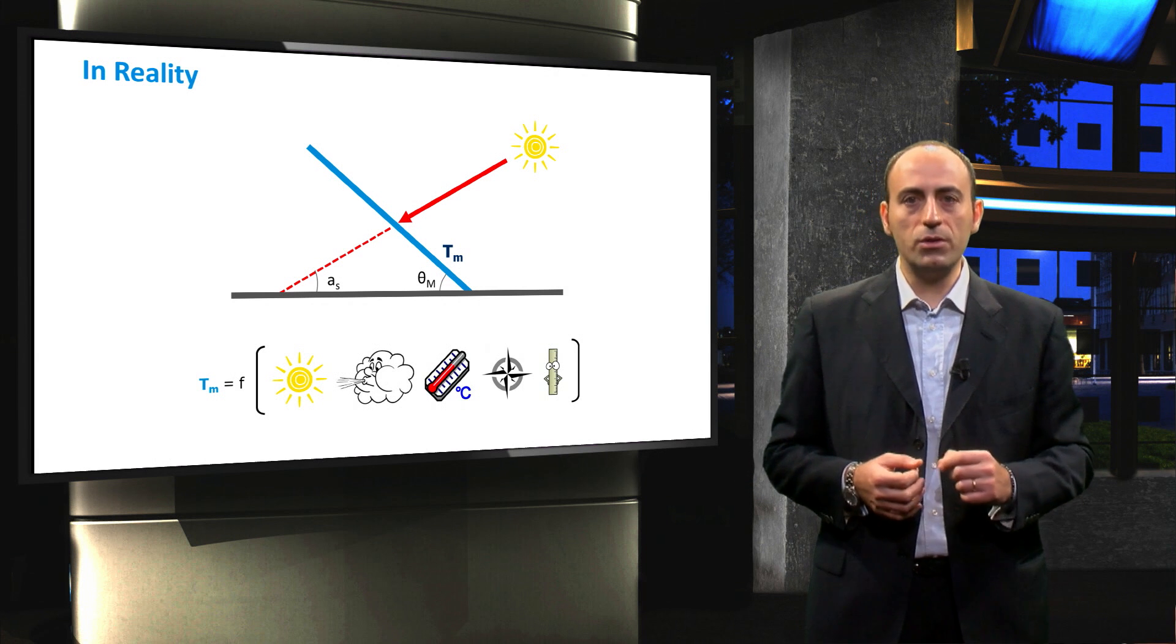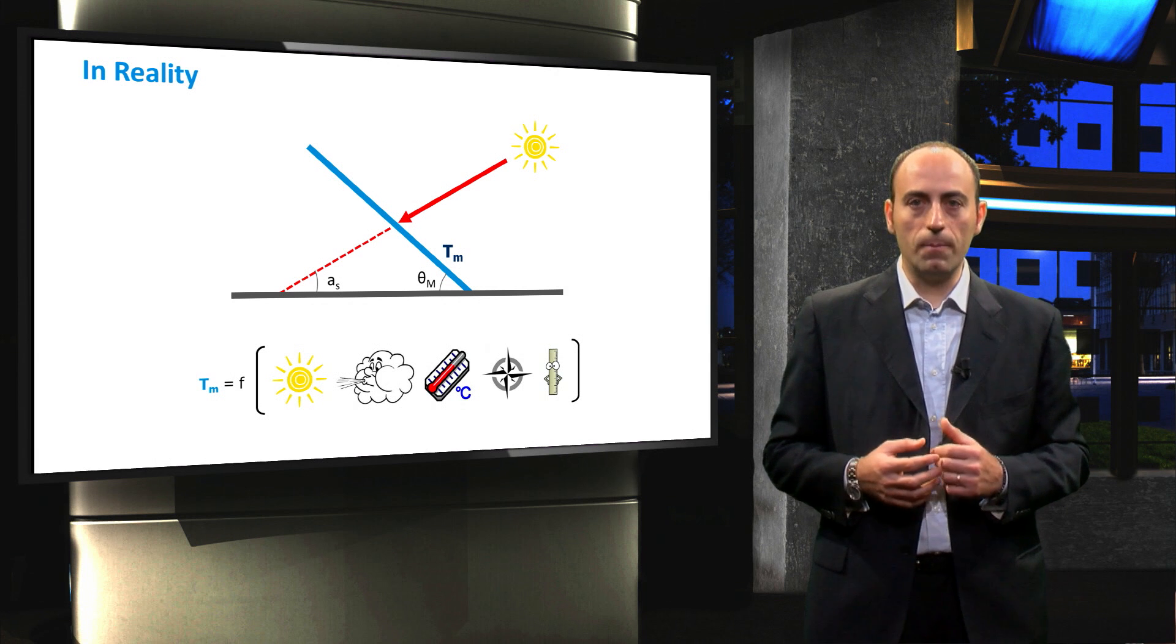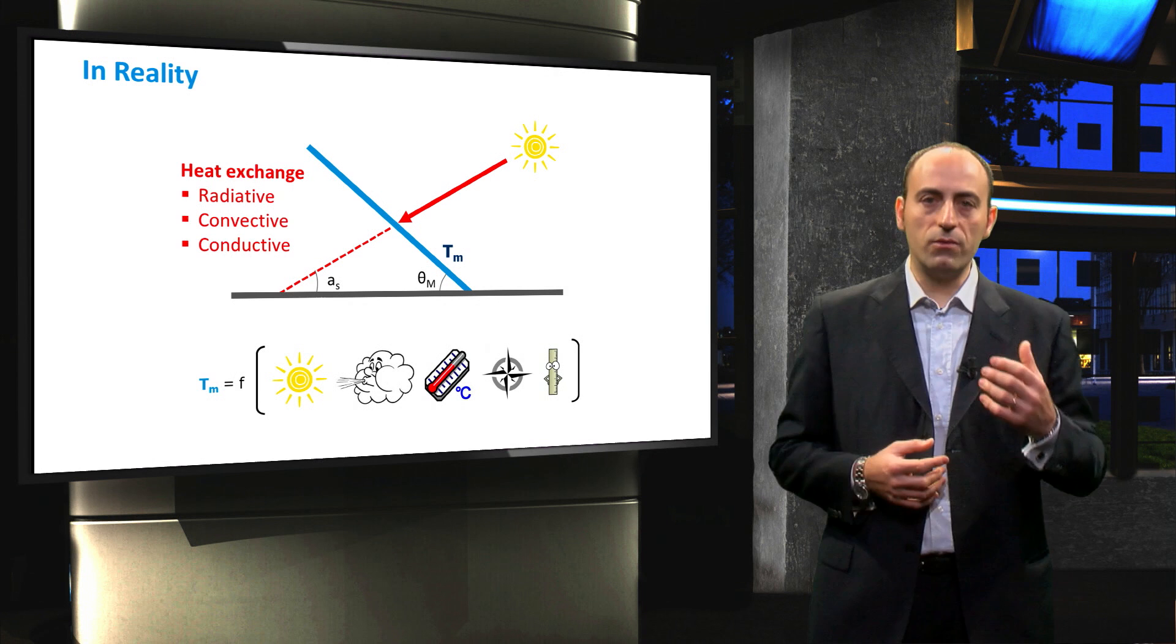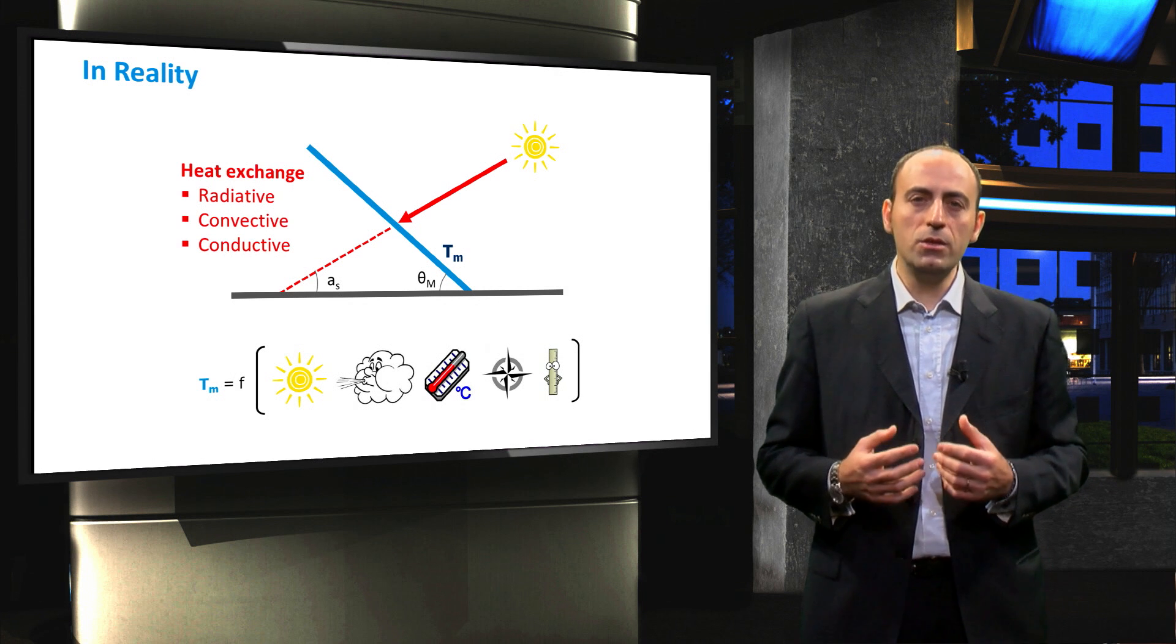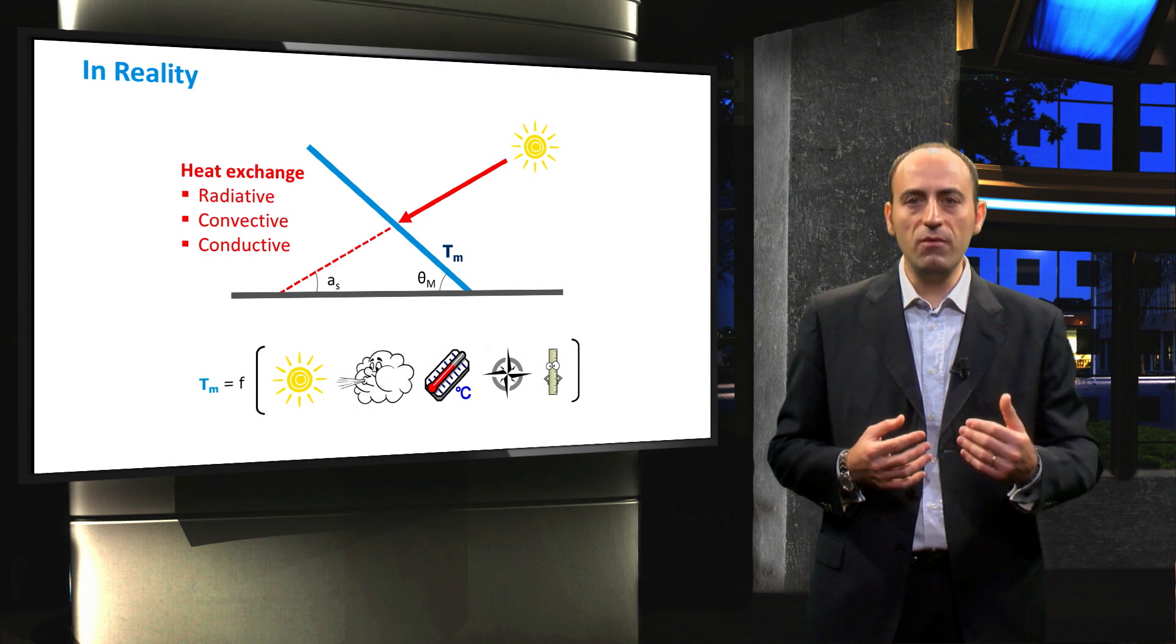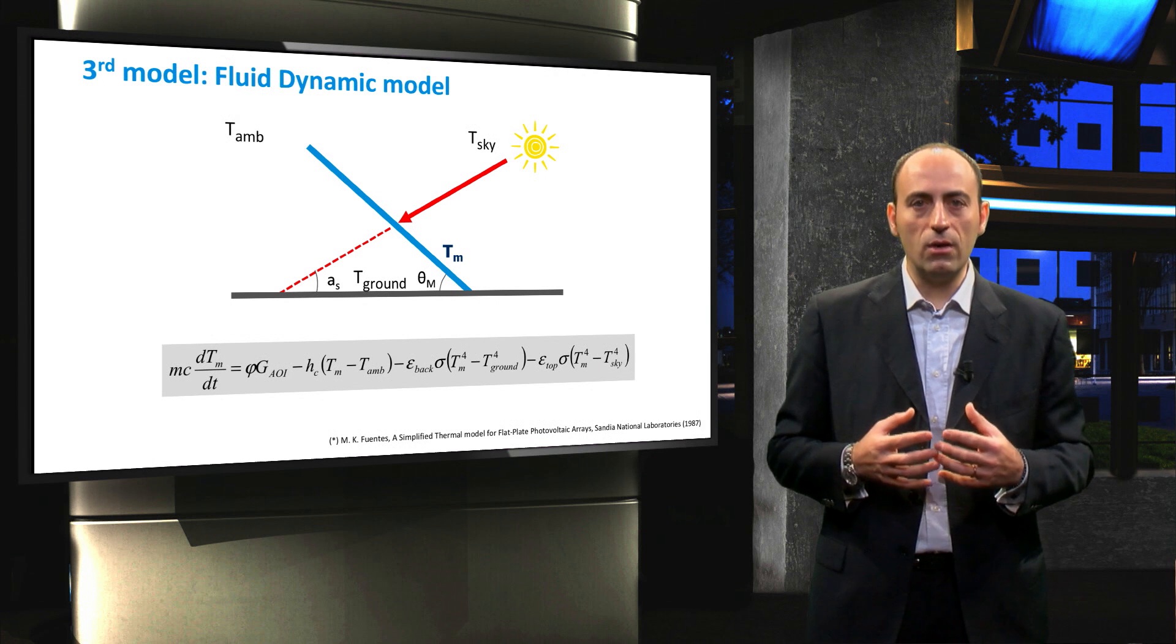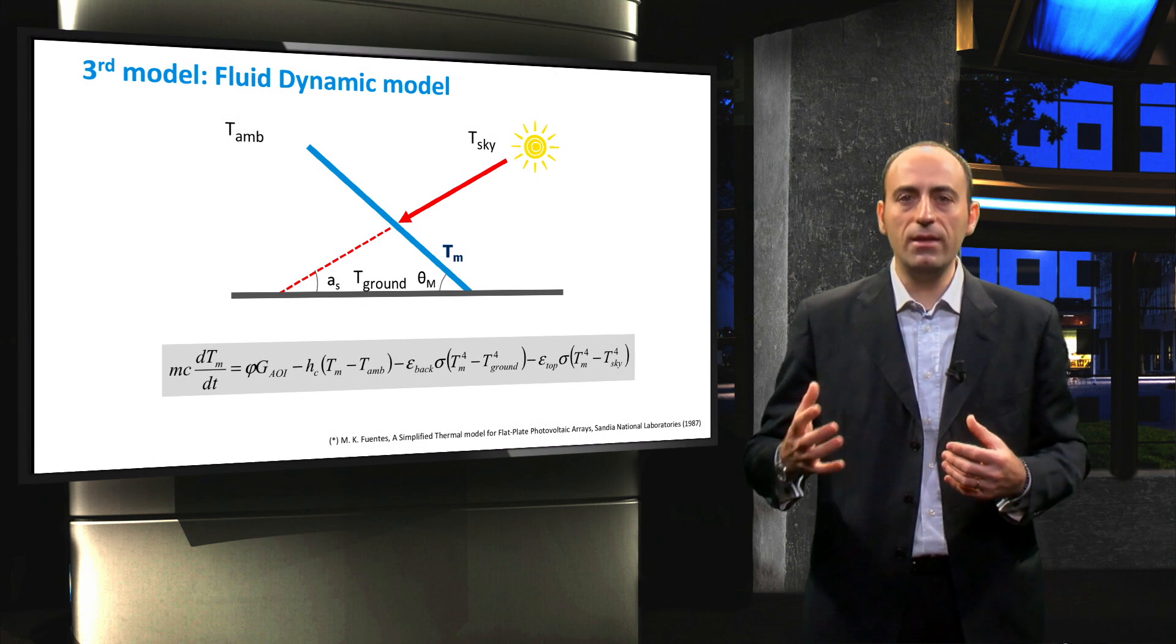The third thermal model we present here is the fluidodynamic model, or FD model. This is based on a detailed thermal energy balance between the module and its surroundings, including radiative, convective, and conductive heat exchange. This model reveals the physics of heat exchange characterizing the temperature of PV modules under illumination. This is a first order differential equation that takes into account the three types of heat transfer between the PV module and the surroundings.